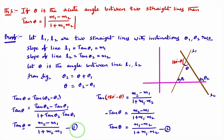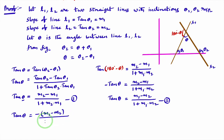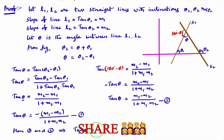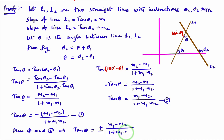From equation 1, tan theta equals m2 minus m1 divided by 1 plus m1 into m2. Taking minus common in the numerator gives minus of m1 minus m2 divided by 1 plus m1 m2. From equation 2, tan theta equals m1 minus m2 divided by 1 plus m1 into m2. Combining equations 1 and 2, tan theta equals plus or minus of m1 minus m2 divided by 1 plus m1 into m2.